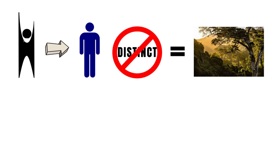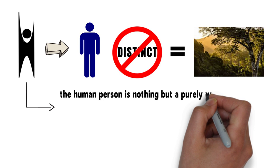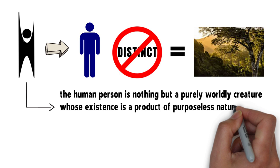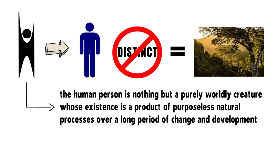For the humanists, the human person is nothing but a purely worldly creature whose existence is a product of purposeless natural processes over a long period of change and development.